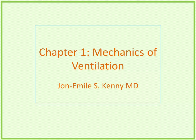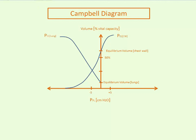Chapter one: the mechanics of ventilation. I'm going to introduce or reintroduce the Campbell diagram. The Campbell diagram is the superimposition of the elastance or compliance curves — elastance and compliance are inverse of each other, so physiologists tend to use them interchangeably. This is the elastance curve for the lungs, and this is the elastance curve for the passive chest wall — that is, the chest wall without any activation of the muscles of inspiration or expiration, like chest wall diastole. The intersection of the two is functional residual capacity.